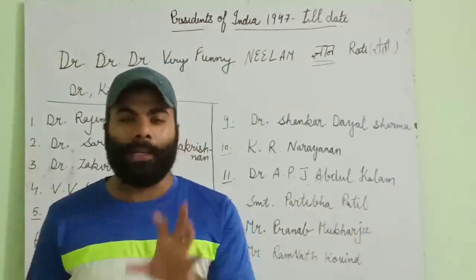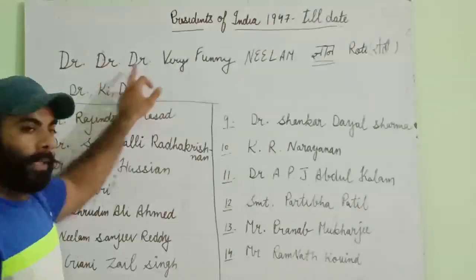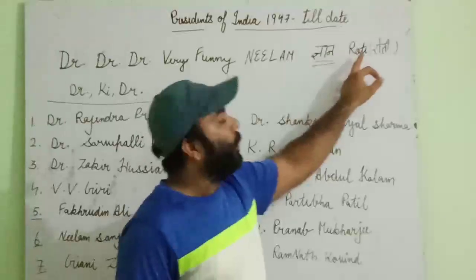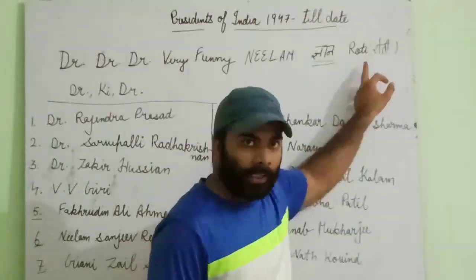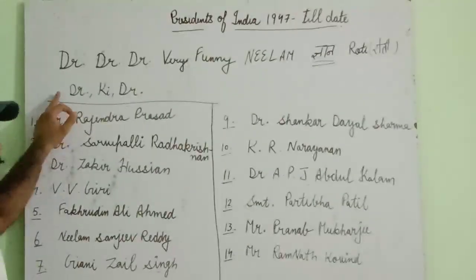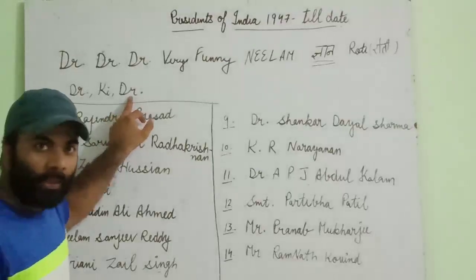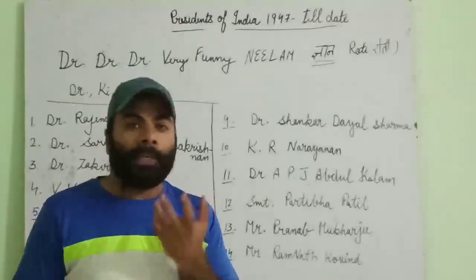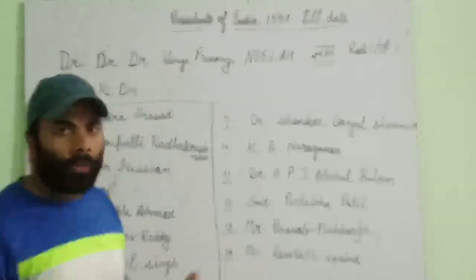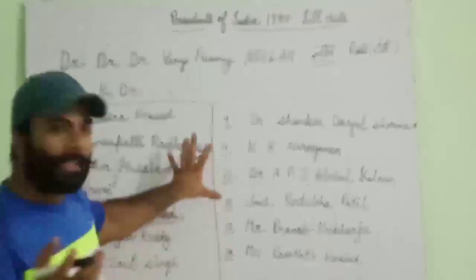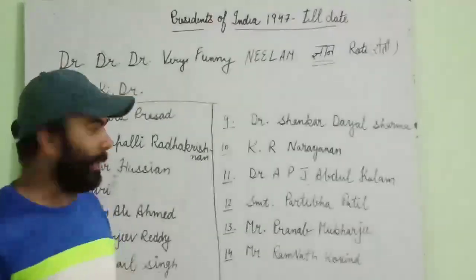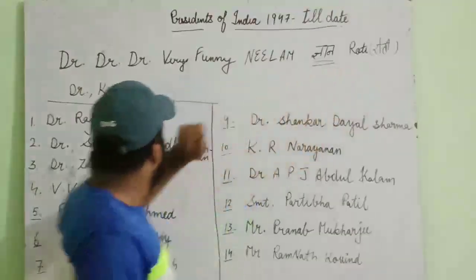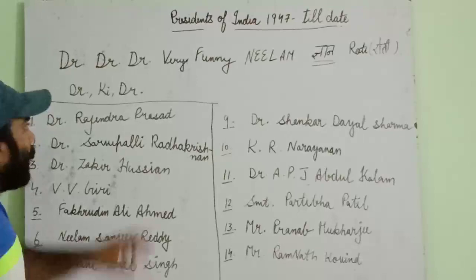We have to learn a line: 'Doctor, Doctor, Doctor — Very Funny Neelam, Gyaan Baati Rahi, Roti Rahi, Gyaan Baati Rahi, Roti Rahi — Kyunki Doctor ki Shaadi Doctor se hogi.' We are going to learn all the presidents of India in sequence using this mnemonic line.